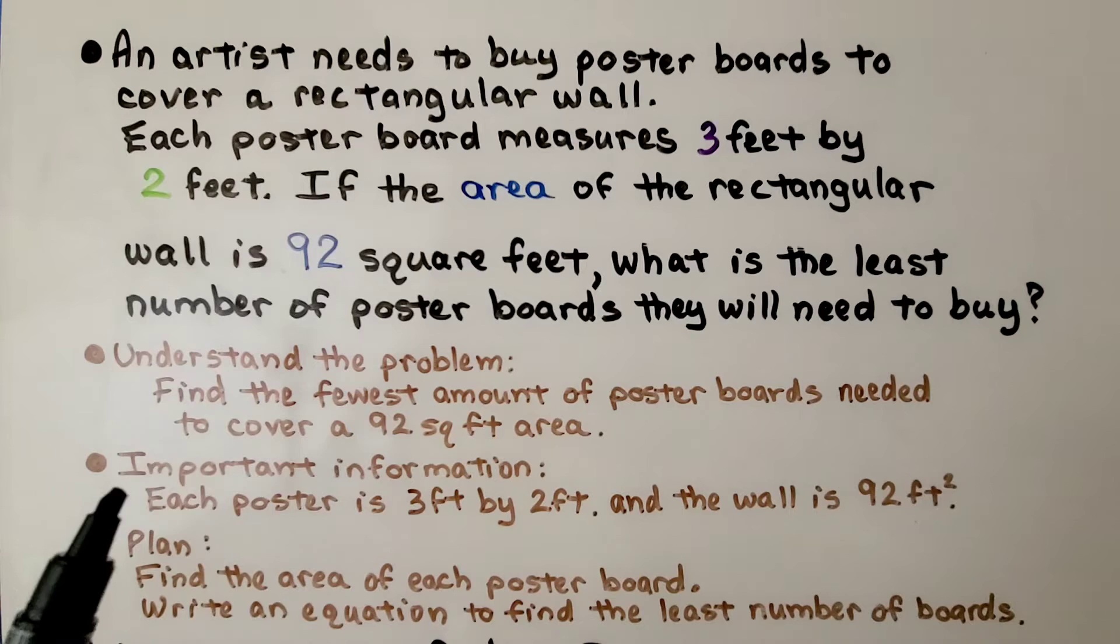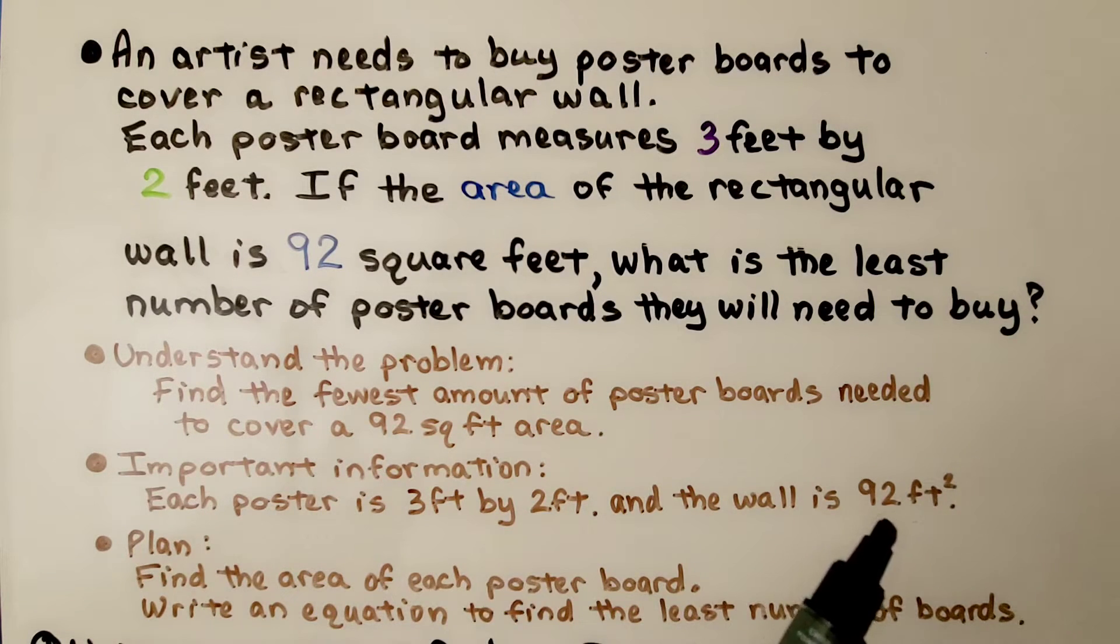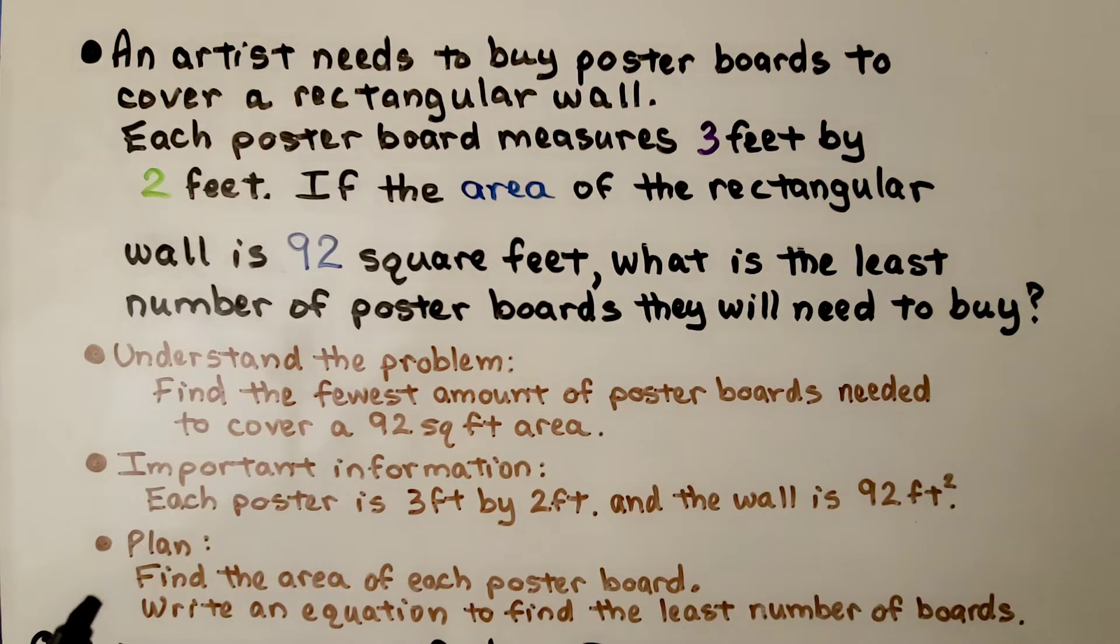The important information is that each poster board is 3 feet by 2 feet, and the wall is 92 square feet. Our plan is to find the area of each poster board and write an equation to find the least number of boards.